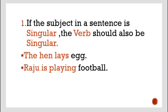Raju is playing football. Here, alone Raju is mentioned — what he is doing is playing football, so it is one person, singular. The hen was giving one egg, that's why it is written E-G-G. Raju — here only Raju's name is mentioned, so one person, it is known as singular.